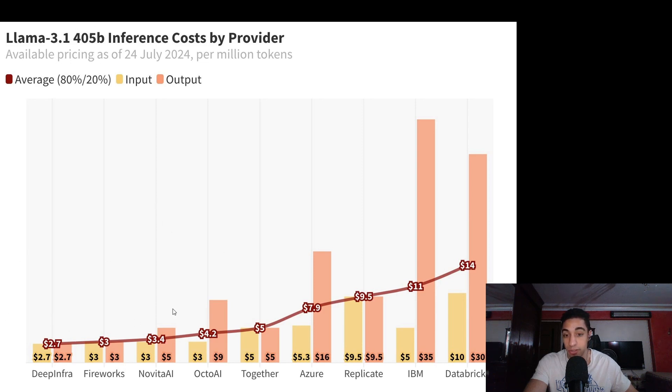For the recently released Llama 3 405 billion, you would see a wide range of pricing for inference. Some companies like startups Deep Infra and Fireworks are cheaply serving it at three dollars, while other companies charge multiples. Using the optimizations we're going to cover today, we're going to efficiently go down in inference costs.